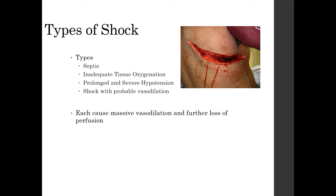These types include septic shock, where there is inadequate tissue oxygenation, or prolonged and severe hypotension, and shock with probable vasodilation. Each of these can cause massive vasodilation and further loss of perfusion.